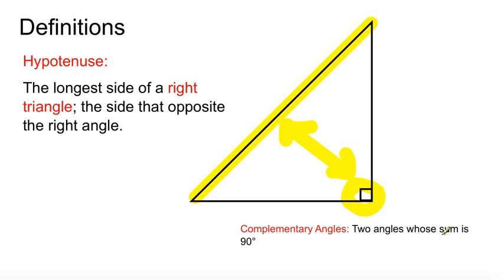Complementary angles are two angles whose sum is 90. One, two, boom, there you go, 90 degrees.